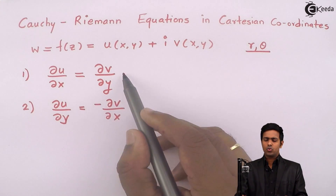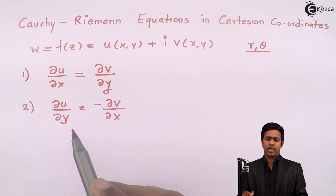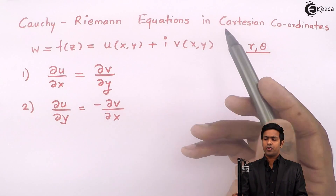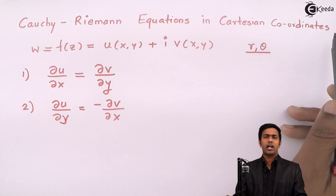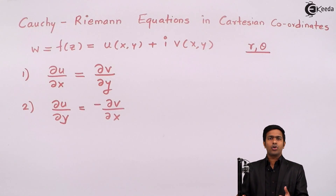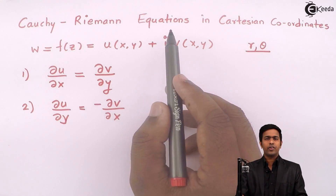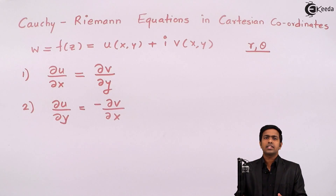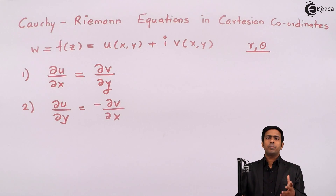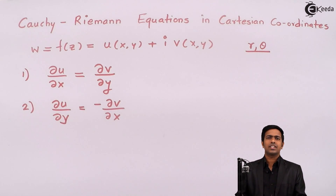These two conditions are called the Cauchy-Riemann equations in Cartesian coordinates. We will see more numericals based on these equations and prove that given functions are analytic using the Cauchy-Riemann equations. Thank you.